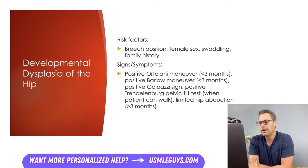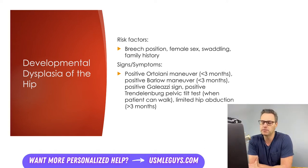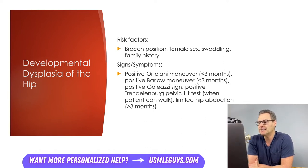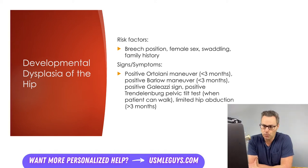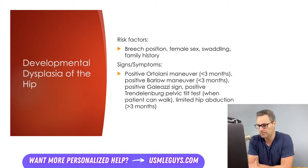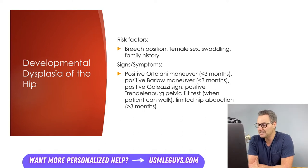In children who can walk, a positive Trendelenburg pelvic tilt test can be used. When a patient stands on one leg on the affected side, the pelvis tilts downward toward the unaffected side — the side without hip pathology. In children older than three months, limited hip abduction to less than 45 degrees would also be consistent with developmental dysplasia of the hip.